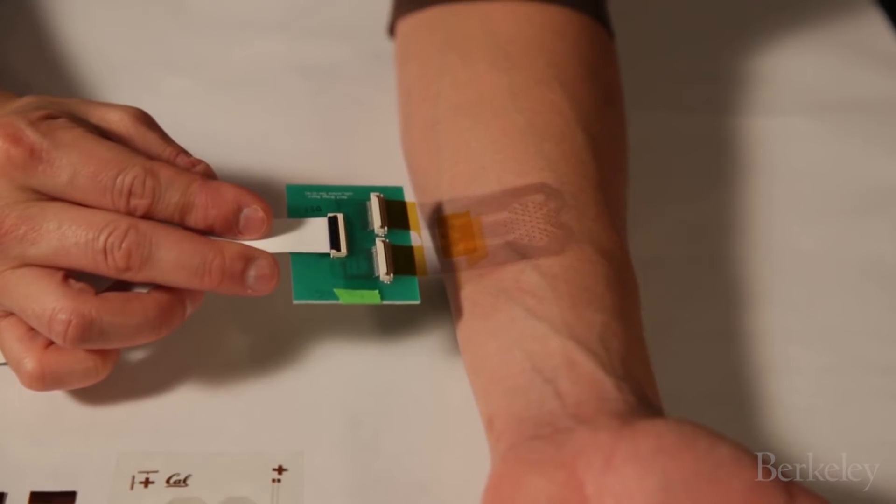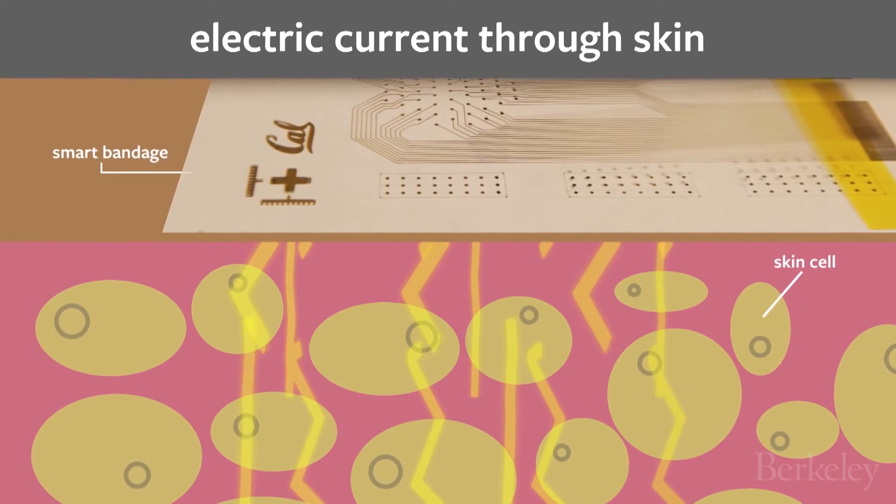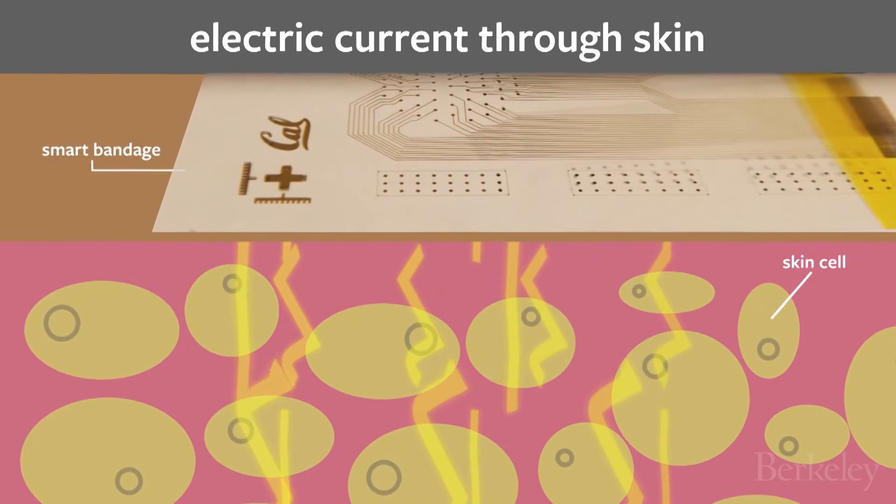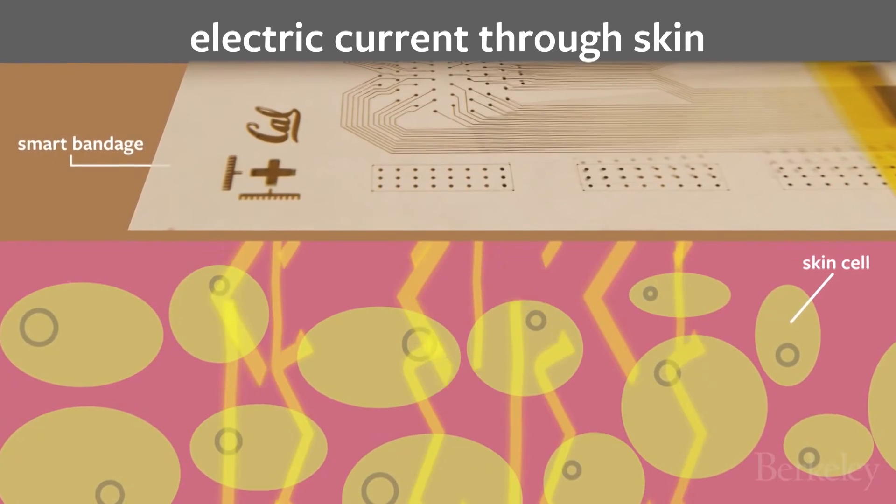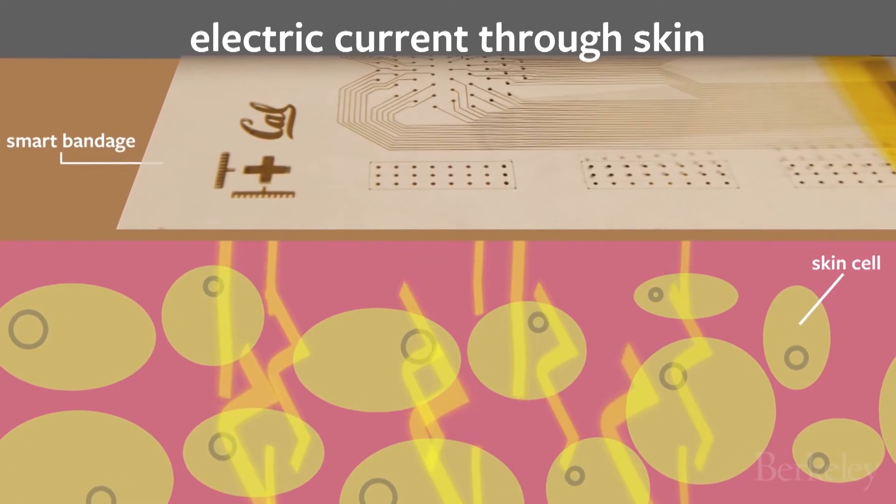You can imagine laying this on your skin. What all these little electrodes do is they're running lots of little bits of current through between themselves. And so when you take all that information, you can build a map of the state of the bedsore underneath where the bandage is.